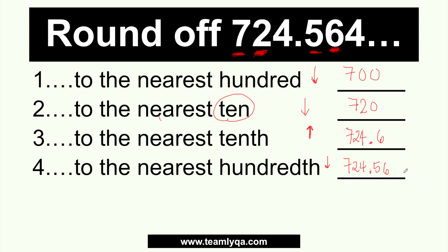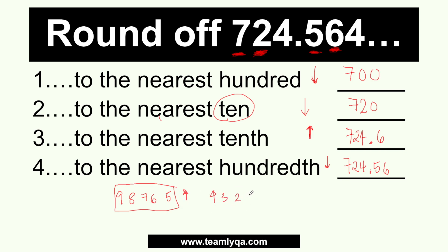Okay, ganun na — yun yung pinaka-konsepto niya. So again, it's all about familiarity doon sa mga places and, of course, the rule ng rounding off. Again: kapag ang number ay 9, 8, 7, 6, at 5 — kasama ang 5 doon — you round up. At kapag naman mas mababa — you have your 4, 3, 2, 1 — you will round down. Ibig sabihin hindi magbabago yung number sa place na yun. Kapag round up, magdadagdag ka ng isa.